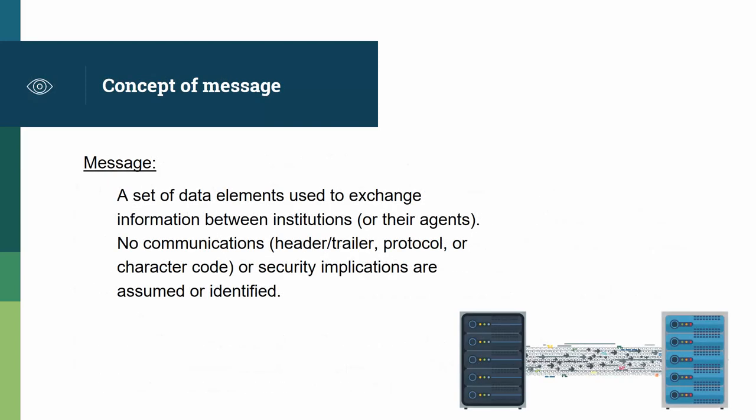Let's now look at the concept of message. ISO 8583 defines a message as a set of data elements used to exchange information between institutions or their agents. An important point is that no communications — so that header, trailer, protocol, or character code, or security implications — are assumed or identified. If you look at the image of the two servers exchanging information, ISO 8583 defines how they would interpret data at a high level. But there are lots of low-level details that need to be worked out between those two servers in order for them to exchange information, and this is outside the scope of ISO 8583 and left for the top layer protocol, or application-specific protocol, to make decisions on.